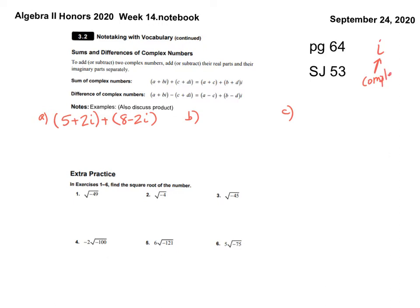I just want to start with adding, subtracting, and multiplying. To add complex numbers, you just add like terms. Add together 5 and 8 — that's 13. Add together 2i and negative 2i — that would be 0i. But we never put 0i; we would just put 13 as the answer.